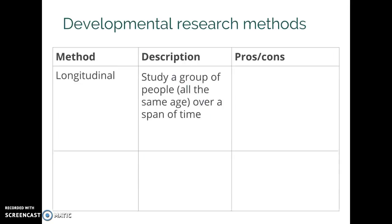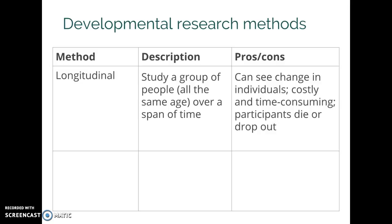So let's start with longitudinal research. The main idea behind this method is that you take one group of people who are all the same age and you study them over some chunk of time — this could be months, it could be years, it could be decades. The advantage of this is that you're studying the same change in the same people over time, so you get to actually compare one person's data at an older age with their own data from a younger age.